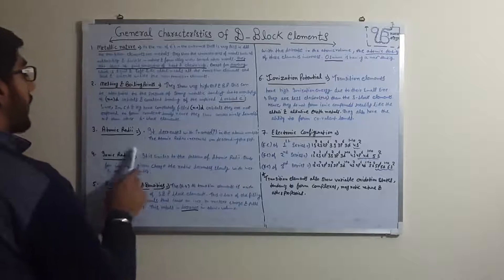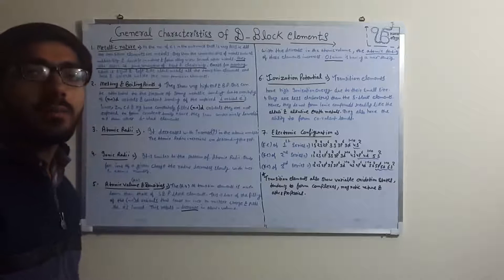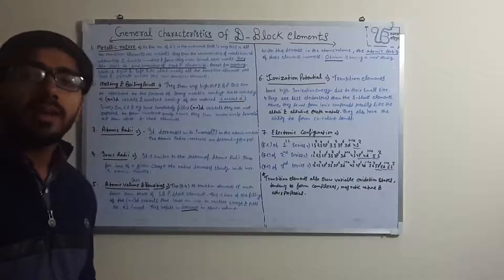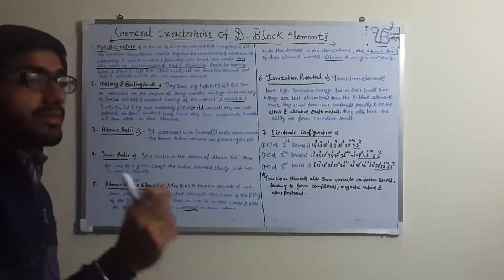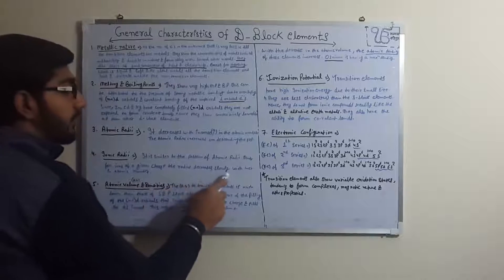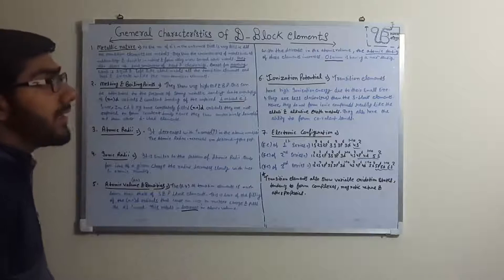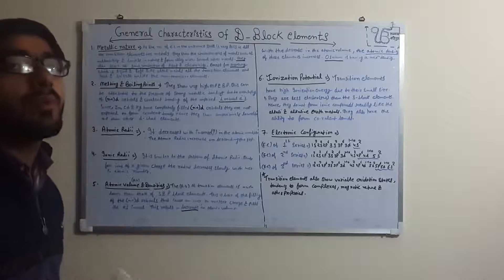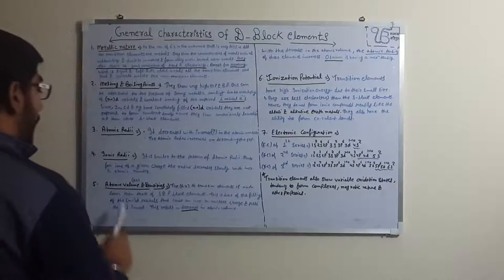Now the fourth point: ionic radii. There are two types of radii — atomic radii and ionic radii. Ionic radii follows a similar pattern to atomic radii. For ions of a given charge, the radius decreases slowly with increase in atomic number. So ionic radii is also inversely proportional to atomic number — as atomic number increases, ionic radii decreases.